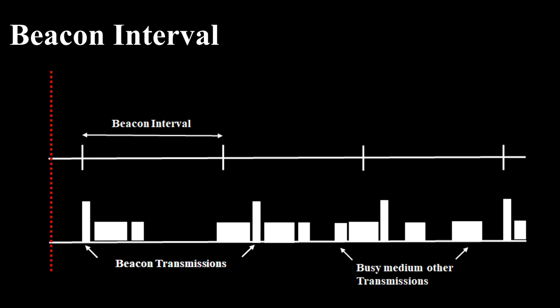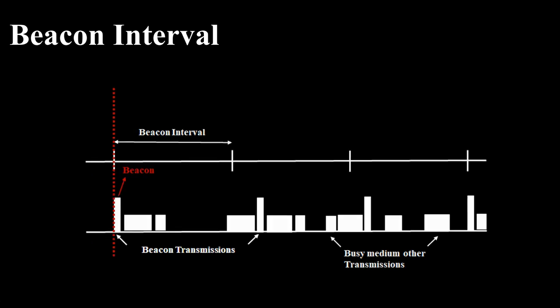Beacon Interval (2 byte): This field represents the number of time units (TU) between Target Beacon Transmission Times (TBTT). The default value is 100 TU, which is 102.4 ms. Beacons are sent by the AP at a regular interval defined as the TBTT. For example, if you set the beacon interval to 100 TUs, you are effectively setting it to 102,400 microseconds or 102.4 ms. One Transmission Unit (TU) equals 1024 microseconds; therefore, Beacon Interval = 100 TU = 100 × 1024 µs = 102.4 ms.